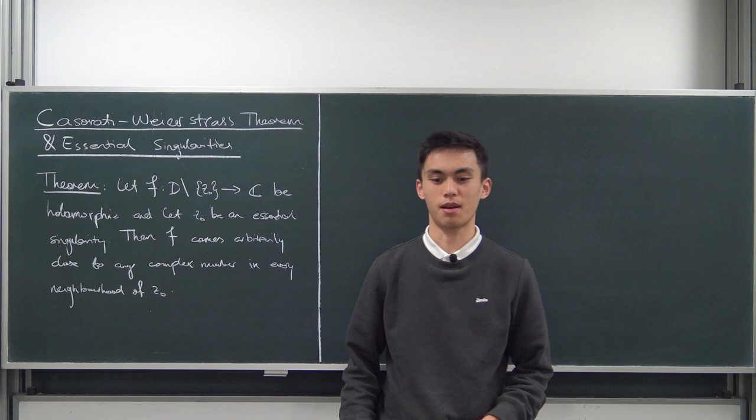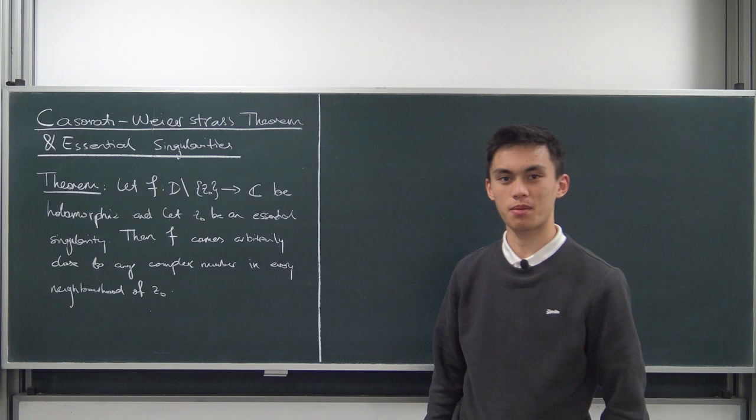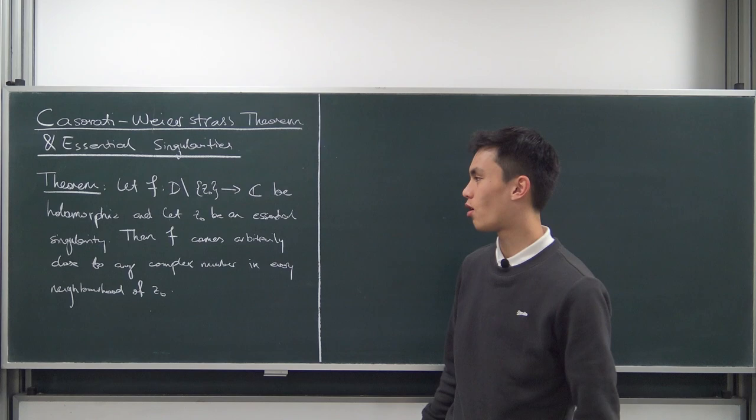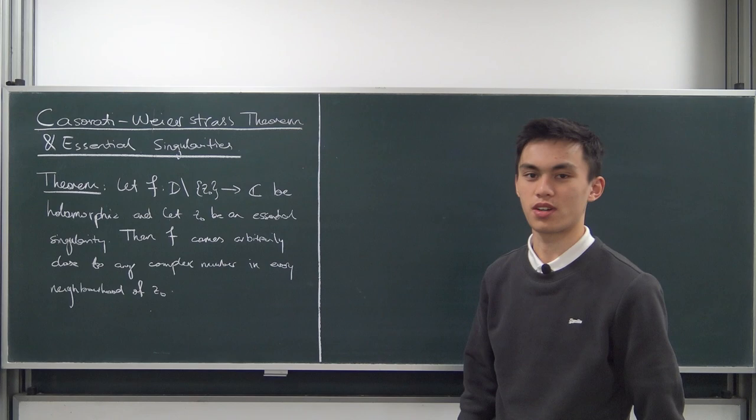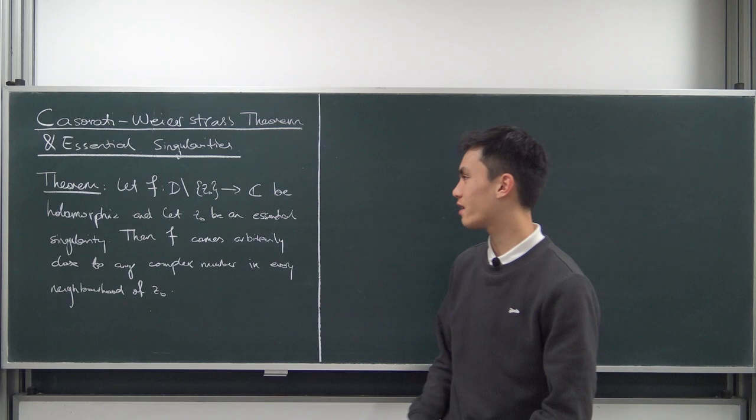Greetings everybody and welcome back to some more complex analysis. Today I'm in the physics building, because the room I use in the maths building is never available now — there are classes in there all the time. So yeah, in the physics building and this blackboard is horribly old. What are we doing today? We're taking a look at the Casorati-Weierstrass theorem and we're going to take a look at some essential singularities as well.